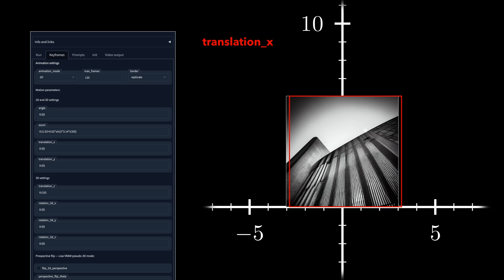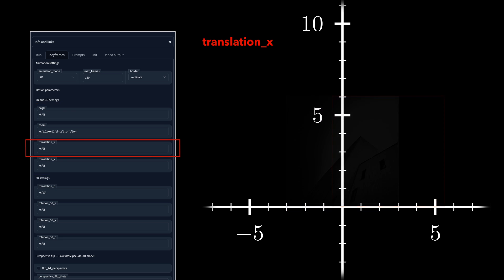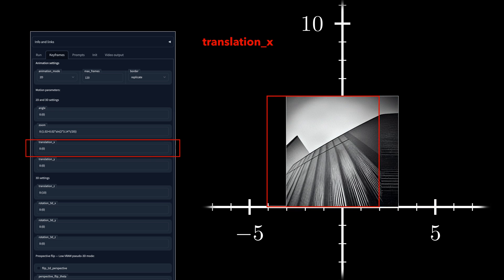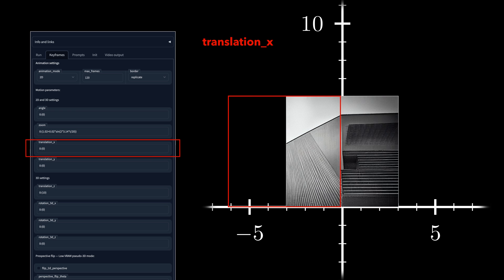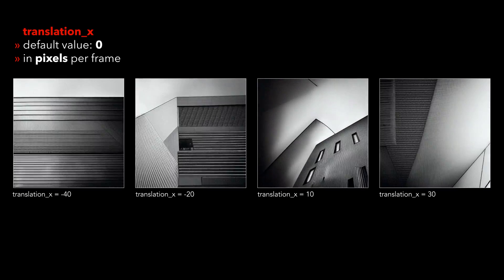Putting a positive value into the Translation X input field, we'll move the canvas to the right. And a negative value will move it to the left. The bigger the value, the faster the movement.